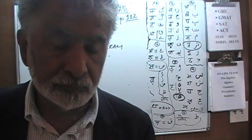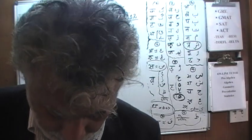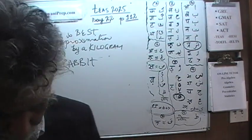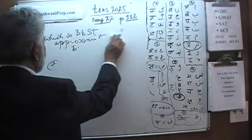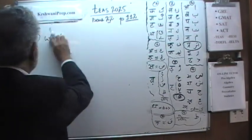The answer is a rabbit. The weight of a rabbit is an appropriate thing to measure in kilograms. Your rabbit might weigh two kilograms, which is about four pounds — that seems perfectly logical. Let's look at question number five, the last one.